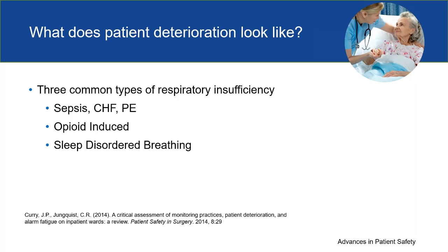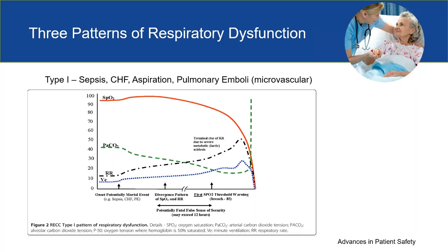Now I want to talk about what patient deterioration looks like. There are three main types of respiratory insufficiency that result in arrest and patient harm. The first, Type 1, is a rapidly evolving clinical cascade usually related to sepsis, CHF, aspiration, or pulmonary emboli — all involving the microvascular. Early in the trajectory, you will see a rise in respiratory rate and a rise in minute ventilation.